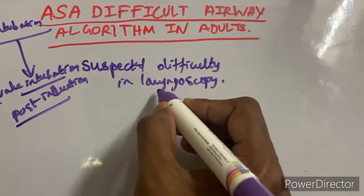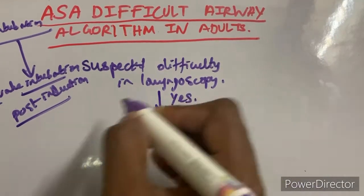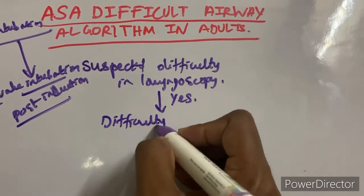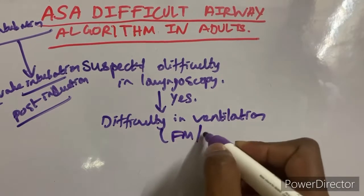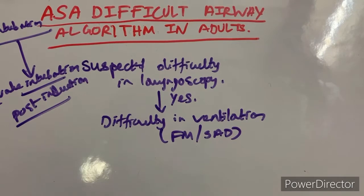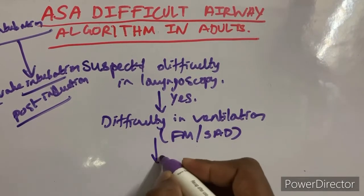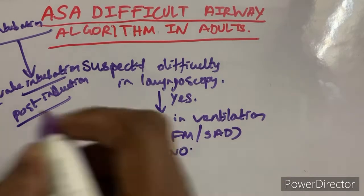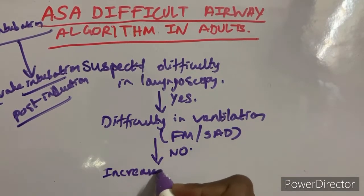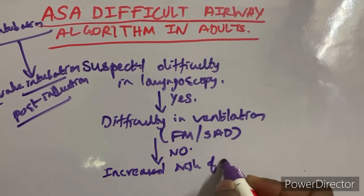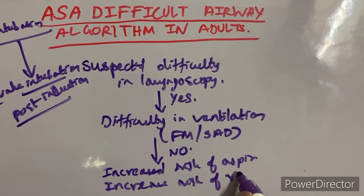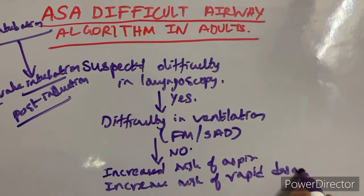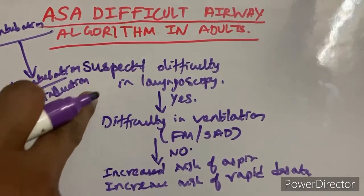To decide between awake or post-induction intubation, assess these parameters: first, difficulty in laryngoscopy; second, difficulty in ventilation using either a face mask or supraglottic airway devices. If there is no difficulty in ventilation, then assess if there is any increased risk of aspiration or increased risk of rapid desaturation.